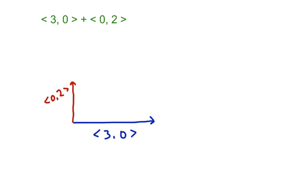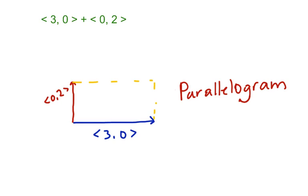You start at just some point — remember with vectors, it doesn't matter where you start. We go over 3 and up 0. Then if we add on the vector (0, 2), starting at the same point, we go over 0 and up 2. One method we can use is to put the beginning points of each vector together — this is the tail-to-tail method.